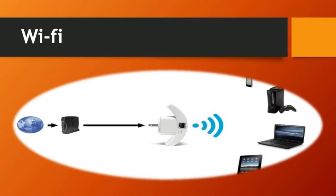Wi-Fi connection: wireless technology allows users to have a mobile connection. Without wire — just like we use mobile phones — Wi-Fi is also a wireless connection. Through this, we connect each mobile device and get an internet connection. Nowadays with smartphones, we are using Wi-Fi to connect to everything.